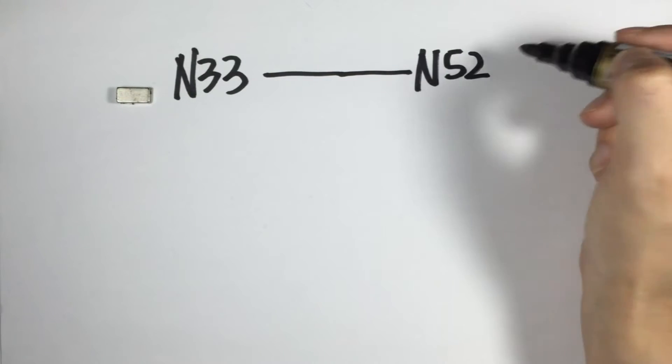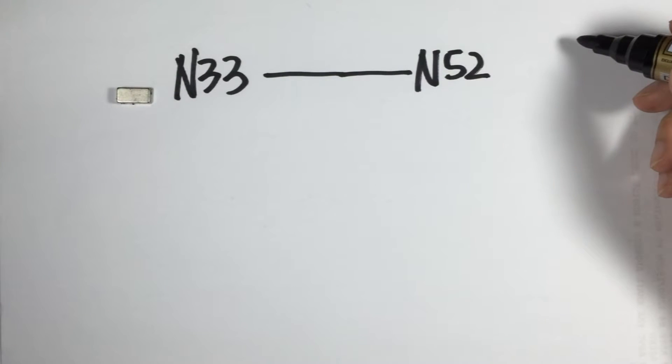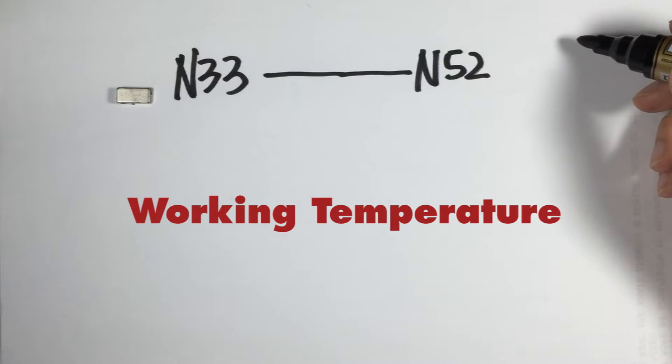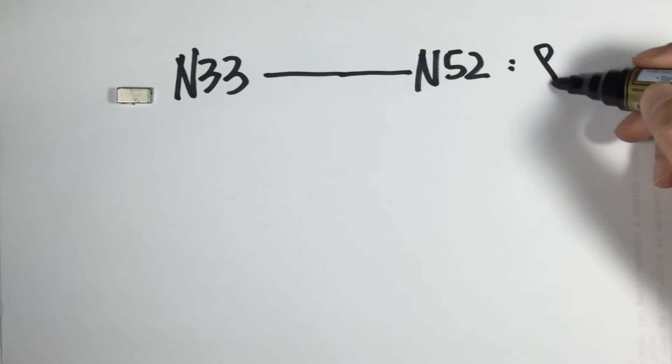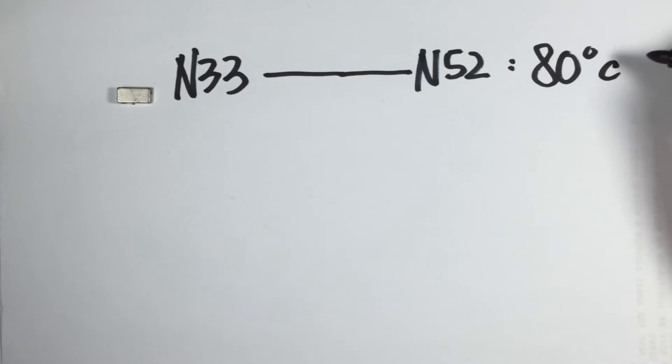But grades don't just determine the strength. Another important characteristic to take note of is the working temperature. N33 to N52 is the N-series, which means the magnet can get exposed to a temperature up to 80 degrees Celsius. If it goes beyond that, it loses its magnetization.